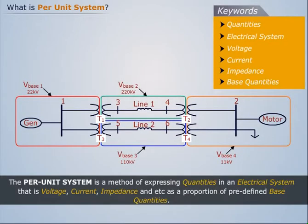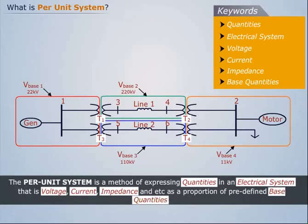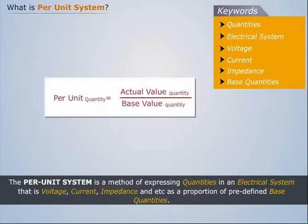Thus, the per unit system is a method of expressing quantities in an electrical system—that is voltage, current, impedance, etc.—as a proportion of predefined base quantities. In a per unit system, each system variable or quantity is normalized with respect to its own base value.